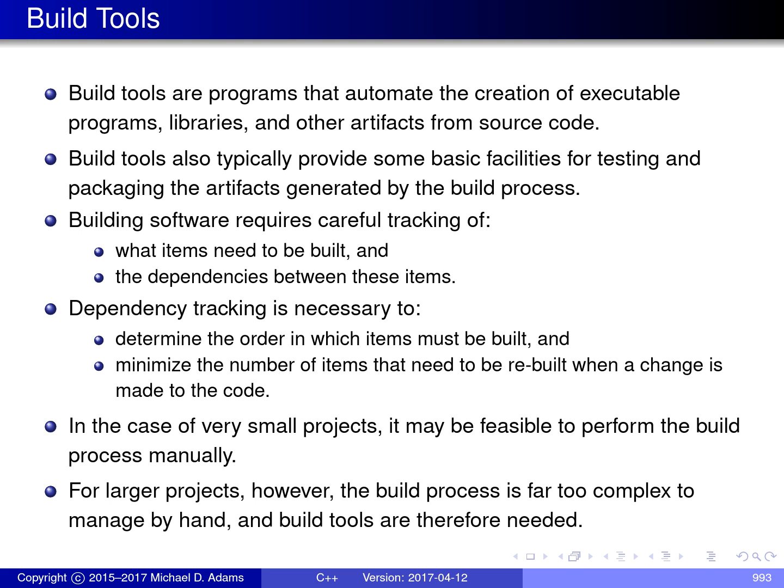Since none of the other 999 source code files depend on the single source code file that was changed, it is not necessary to recompile any of these other 999 files. To rebuild the code in this case, it is sufficient to simply compile the one source code file that was changed and then perform a single linking operation. Thus, by using dependency tracking, the amount of time required to build software can be greatly reduced.